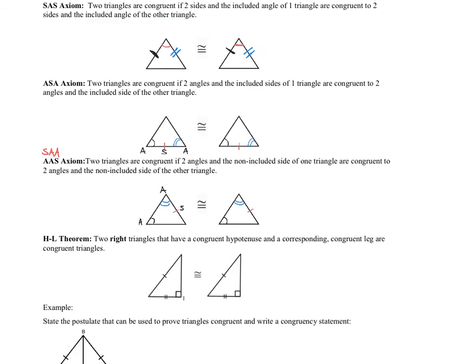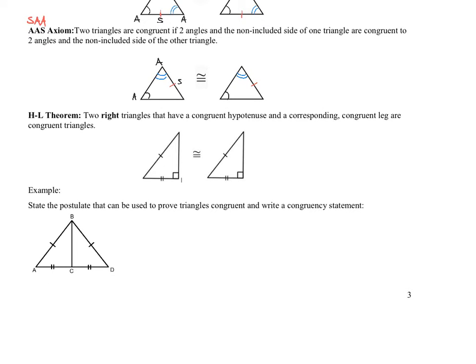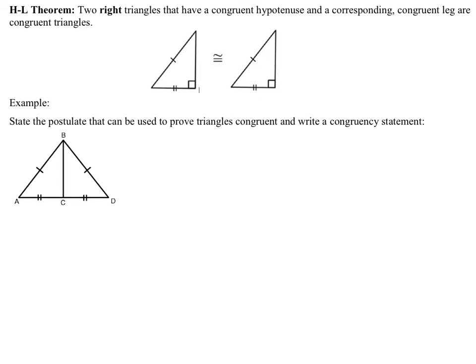The HL theorem is a nice one, but historically people fall in love with it and want to use it for everything. It only works for right triangles. If you know you're dealing with a right triangle, and the hypotenuses are congruent, and a pair of corresponding legs are congruent, then the triangles are congruent. It's actually a variation of the SSA/ambiguous case, but it only applies to right triangles.